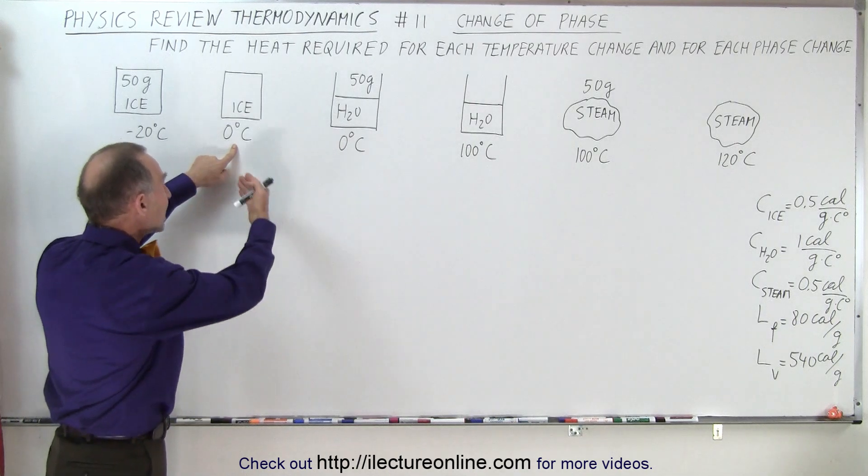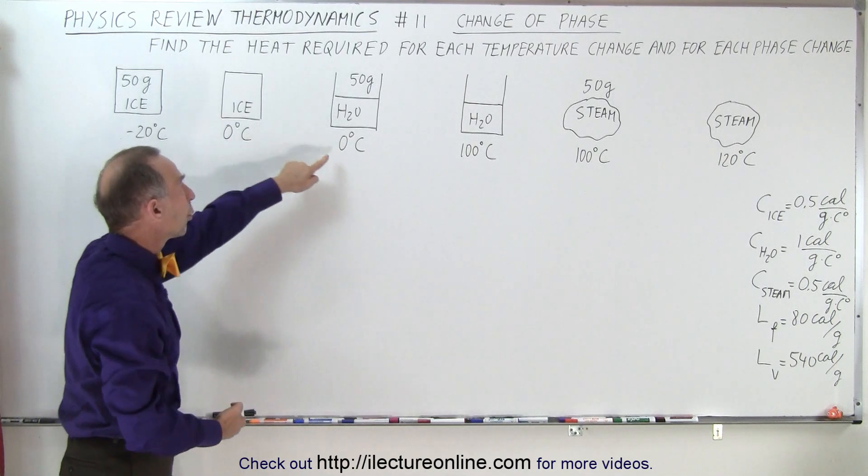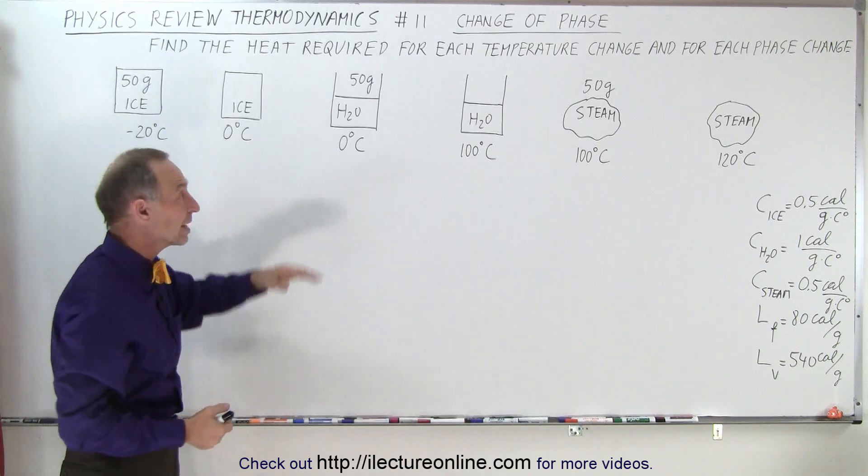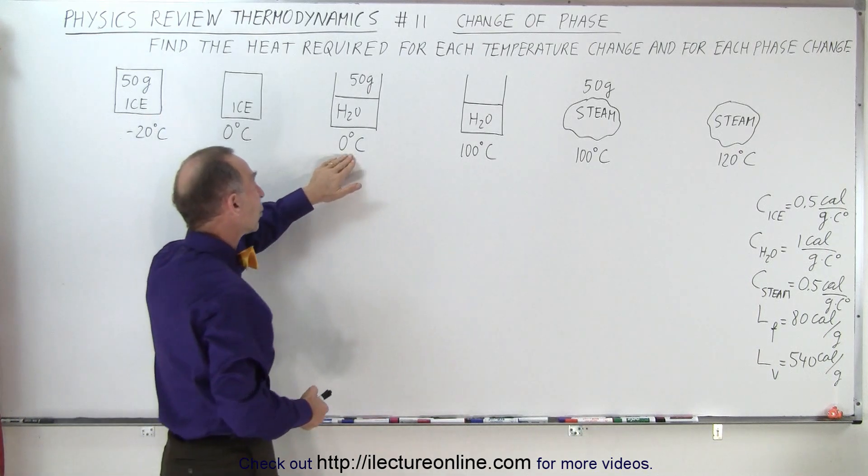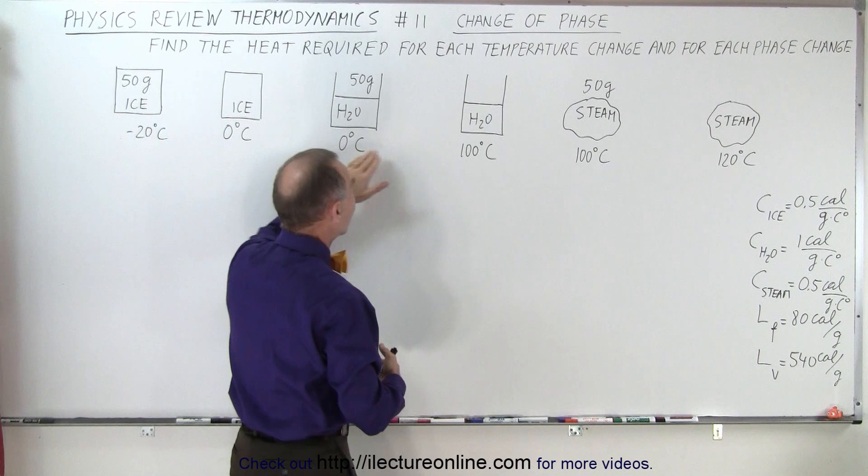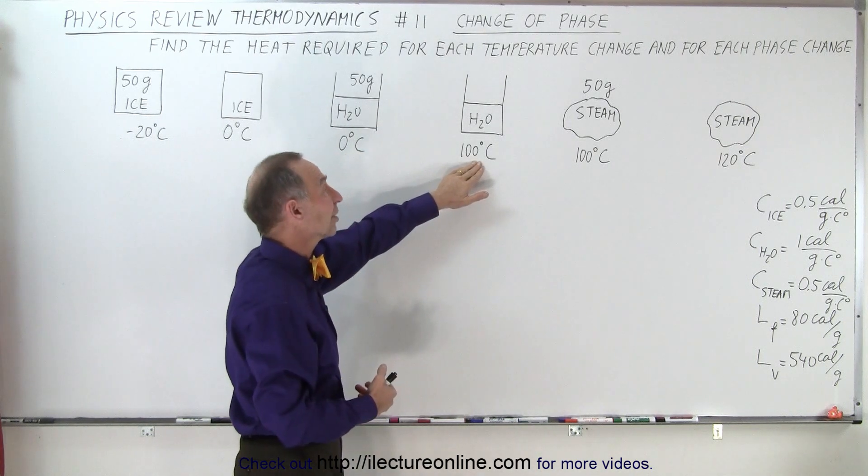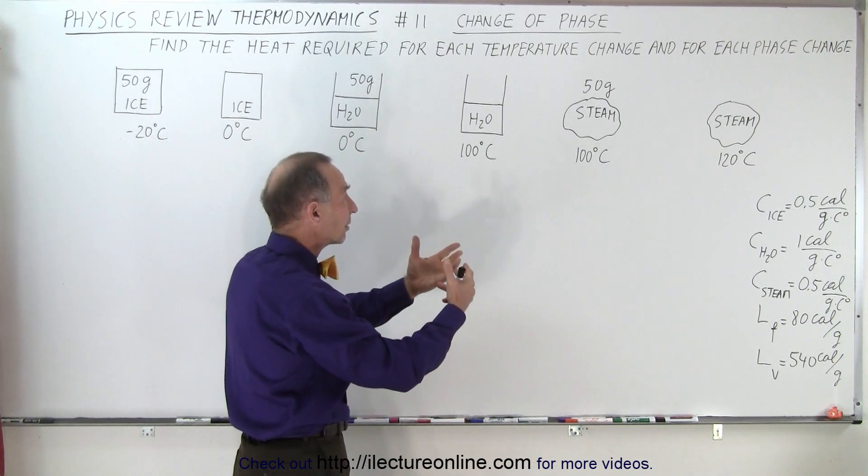And we heat it up until the ice is at 0 degrees Celsius. Then we continue to heat it, and then the ice will turn into water. That's a phase change, and that takes a certain amount of heat. Then we take the water at 0 degrees Celsius, we heat it some more until it gets to 100 degrees Celsius.